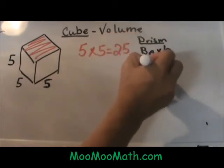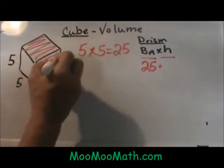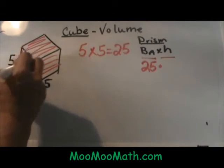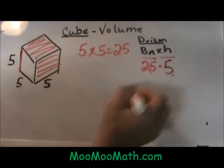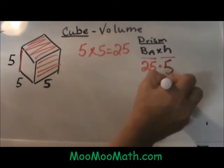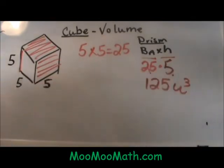I am going to plug a 25 in for my base area. Then I am going to multiply it times the height of the cube, and the height is also 5. So I am going to multiply that by 5. So 25 times 5 is 125, and because this is volume it is units cubed because it is three dimensional.